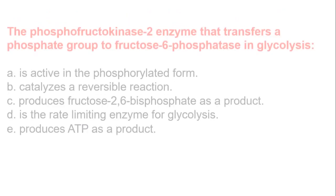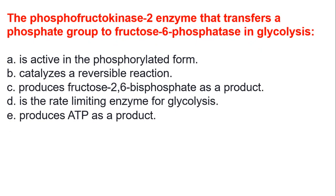The next question: the phosphofructokinase-2 enzyme that transfers a phosphate group to fructose-6-phosphate in glycolysis — A, is active in phosphorylated form. B, catalyzes a reversible reaction. C, produces fructose-2,6-bisphosphate as a product. D, is the rate-limiting enzyme for glycolysis. E, produces ATP as a product. The answer is C, which is it produces fructose-2,6-bisphosphate as a product.